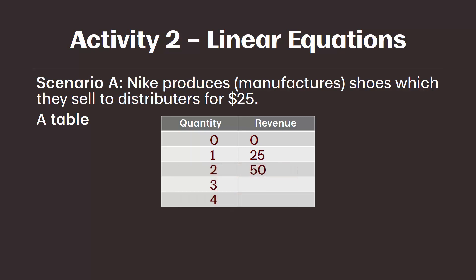Welcome back. You should have calculated $75 in revenue for three units sold and $100 in revenue for four units sold. You just multiply three by 25 — quantity times price — and four by 25, again quantity times price at four units.